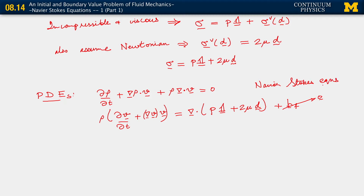The Navier-Stokes equations properly also include an energy equation, but that is often not included because certain assumptions are made on heat conduction or temperature. So essentially here we're assuming that everything is at a uniform temperature, and heat flow does not really matter to us here. So these are the Navier-Stokes equations — now let's apply incompressibility.